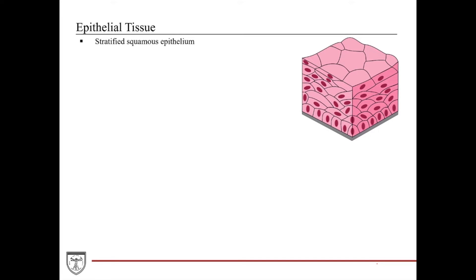On to the stratified squamous epithelium — as the name suggests, we're talking about layered epithelium with the squamous, or flattened, cells on top. Such an epithelium is probably one of the thicker epithelia. Therefore, within the tissue there is a basal compartment and an apical compartment. The basal compartment is characterized by cells that are more cuboidal in shape, and these cells are also specialized in terms of how many hemidesmosomes they express, because they're responsible for holding this entire epithelium down onto the basement membrane.